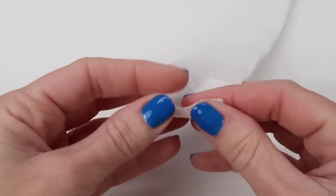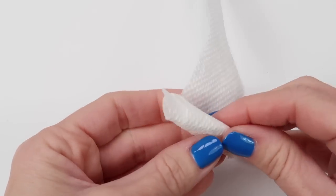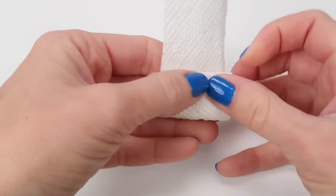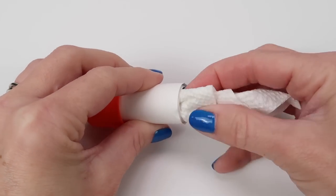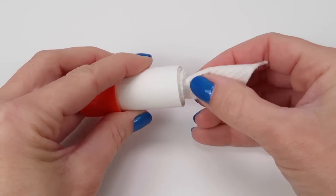Before you glue the top on, take a strip of paper towel, roll it up, and then tug out the inside to make it look like you're pulling a wipe out of the container. Then you will glue it down into the tube.